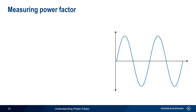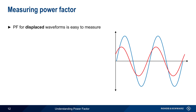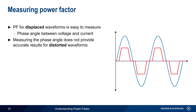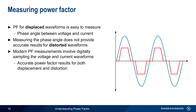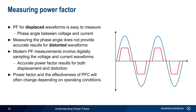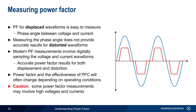So how do we measure power factor and evaluate the effectiveness of power factor correction? It's relatively easy to measure the power factor for displaced waveforms — simply measure the phase angle between voltage and current and take the cosine of this value. However, this approach will not yield accurate results for distorted waveforms, which are often the more common case in modern applications. Therefore, modern power factor measurements usually involve digitally sampling the voltage and current waveforms and using these sampled values to calculate power factor. This provides accurate results for both displacement and distortion. Power factor and power factor correction often change substantially depending on working conditions, so it's important to test under a variety of operating states. Please keep in mind that some power factor measurements may involve high voltages and high currents, and can present a risk to both devices as well as to human operators, so caution is advised.